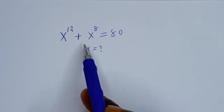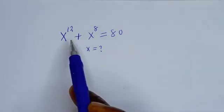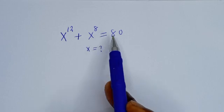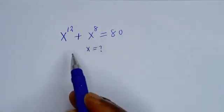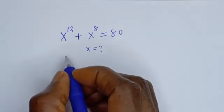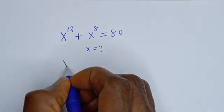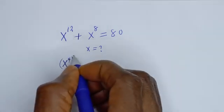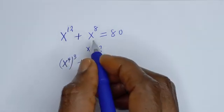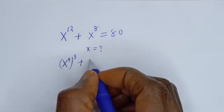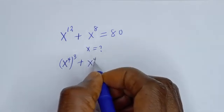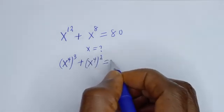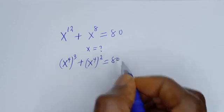Hello, how to solve for S from this given equation: S to the power of 12 plus S to the power of 8 is equal to 80. S to the power of 12 can be written as S to the power of 4 to the power of 3, plus S to the power of 8 can be written as S to the power of 4 squared, is equal to 80.